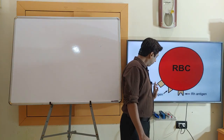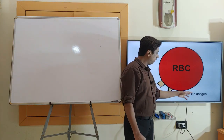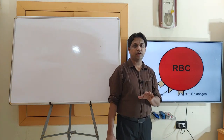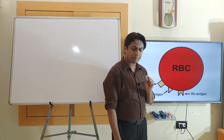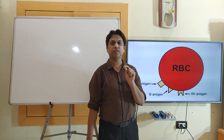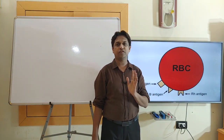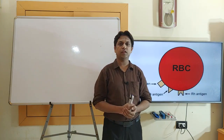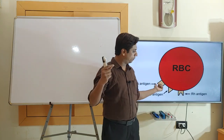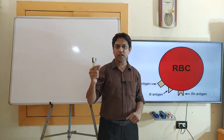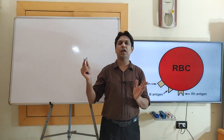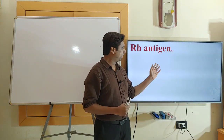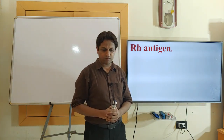Apart from the A and B antigens on the surface of an RBC, there is one more important antigen known as the RH antigen. The presence or absence of this antigen designates blood groups as RH positive or RH negative. For example, A positive means the A blood grouping system with the RH antigen present, and A negative means absence of the RH antigen.